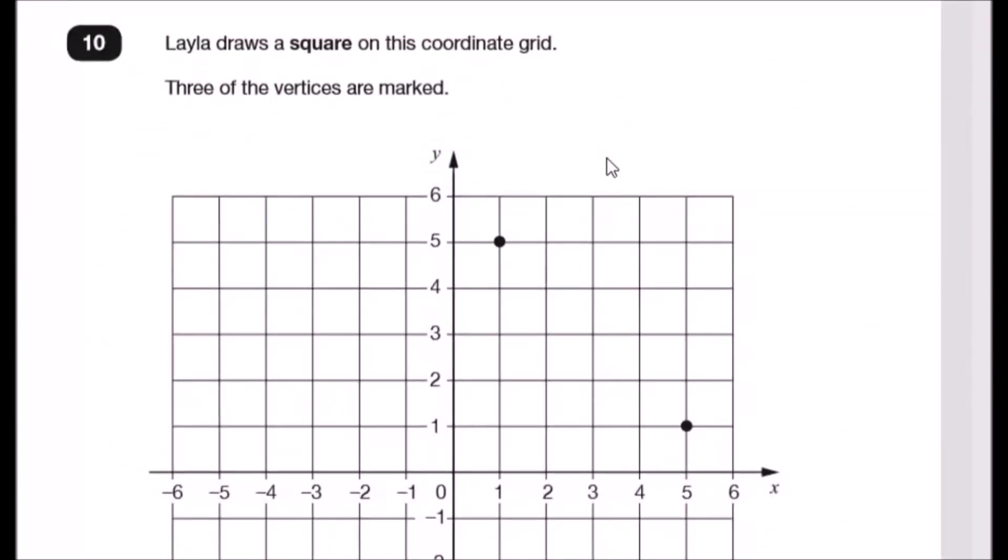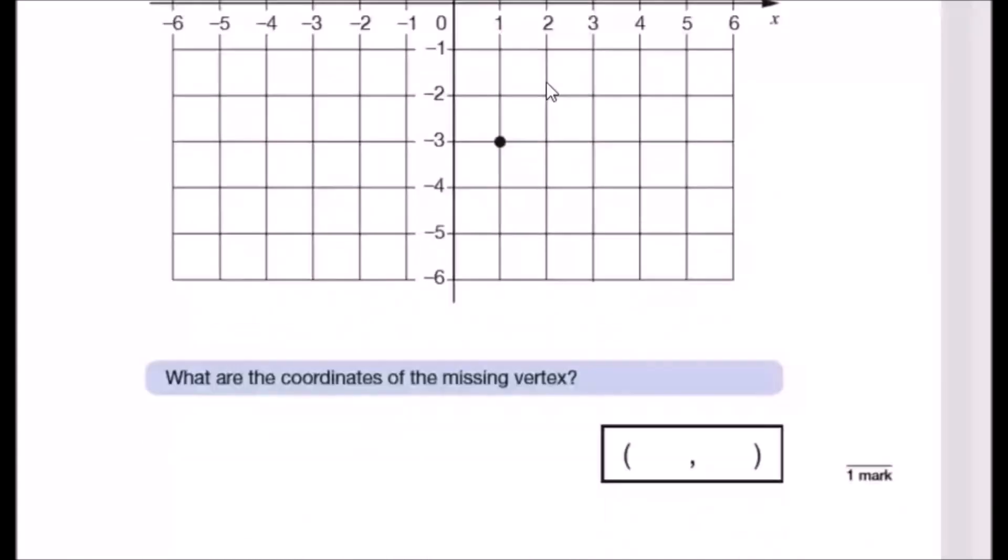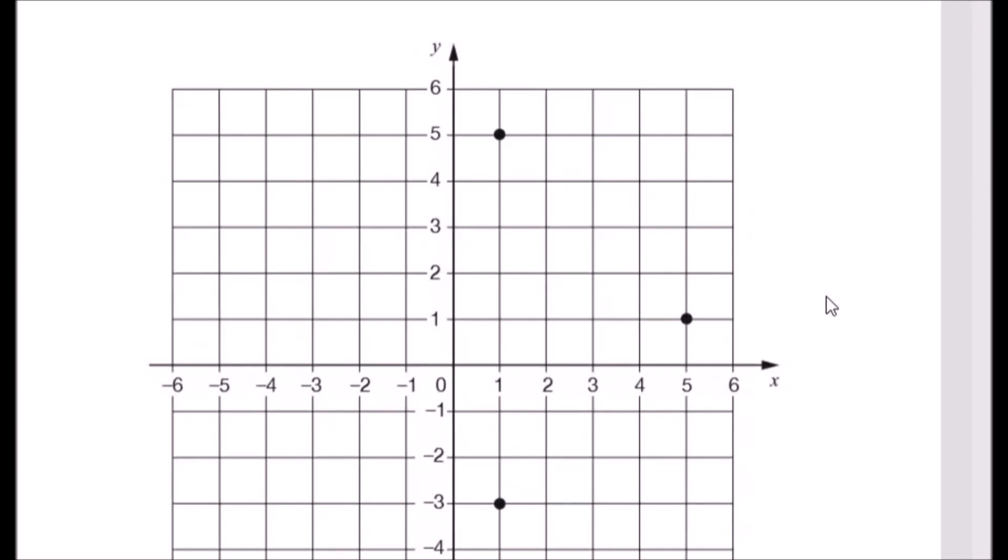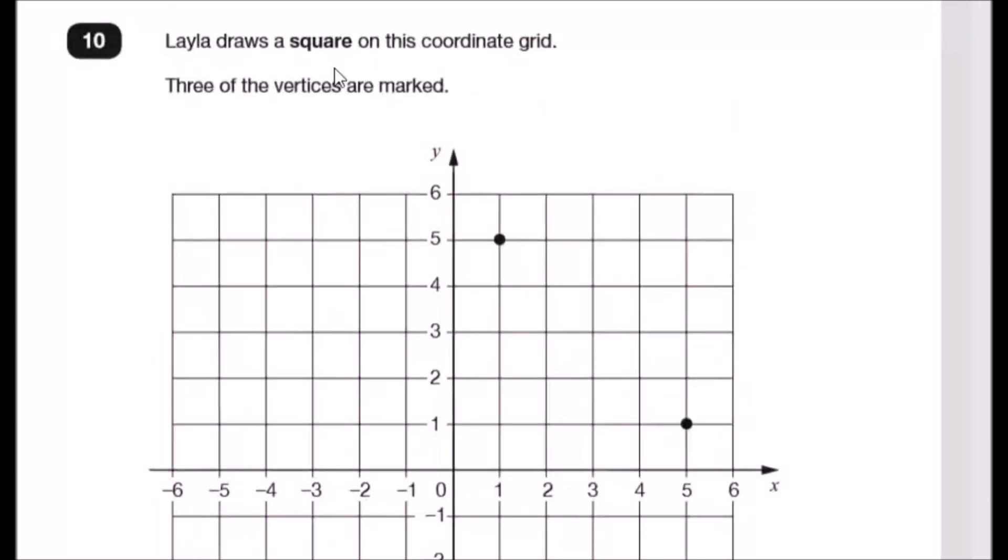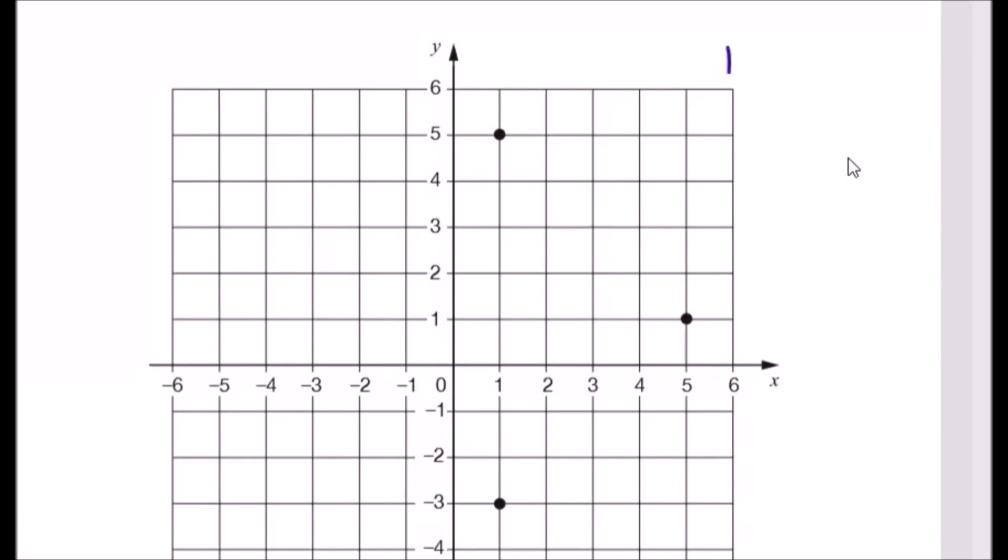Number 10. Layla draws a square on this coordinate grid. Three of the vertices are marked. What are the coordinates of the missing vertex? Now squares of course have equal lengths. The problem here is I'm using freehand. In this question you must always use a ruler guys, so make sure you get your ruler on the exam day. I'm just going to go ahead and sketch it how it should be anyway.